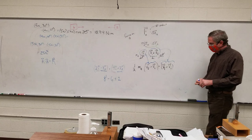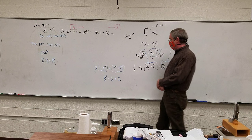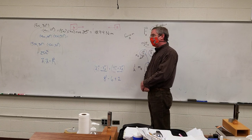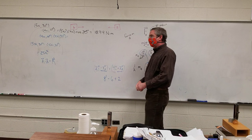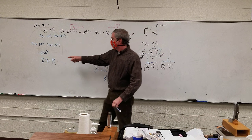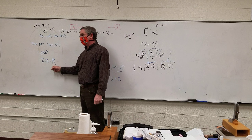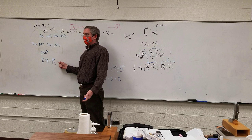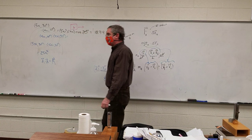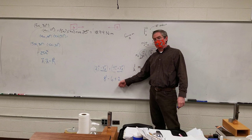Why didn't we leave the dot product result as 8î minus 6ĵ? Because i-hat times j-hat is zero, and i-hat times i-hat equals 1. The magnitude of the unit vector is 1, so it's 1 squared times cosine of 0. It's critical when doing a dot product that the vectors go away at some point.